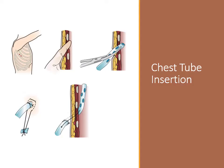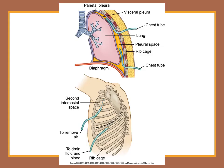Insertion of a chest tube can take place in the emergency department, at the patient's bedside, or in the operating room. The patient is positioned with the arm raised above the head on the affected side to expose the mid-axillary area, the standard site for insertion. Elevate the patient's head 30 to 60 degrees when possible to lower the diaphragm and reduce the risk of injury. A chest x-ray is used to confirm the affected side. The area is cleansed with an antiseptic solution, the chest wall is prepared with a local anesthetic, and a small incision is made over a rib. The area is first probed digitally to avoid injury with a sharp instrument. A clamp is used to hold the chest tube and guide it into place. The tube is advanced up and over the top of the rib to avoid the intercostal nerves and blood vessels that are behind the rib inferiorly. Once inserted, the tube is connected to a pleural drainage system. The incision is closed with sutures, the chest tube is secured, and the wound is covered with an occlusive dressing. Proper placement is confirmed by chest x-ray.